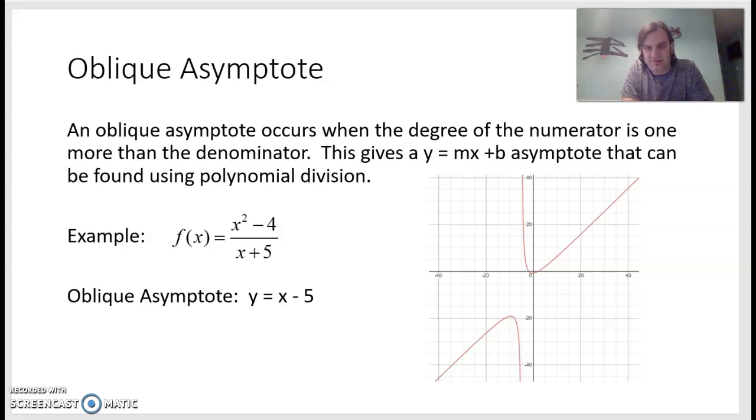Hey, it's Mr. Albert here, and we want to talk about oblique asymptotes. We've already talked about vertical and horizontal asymptotes when dealing with rational functions. An oblique asymptote occurs when the degree of the numerator is one more than the denominator.